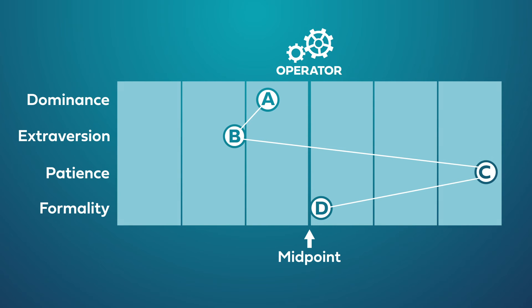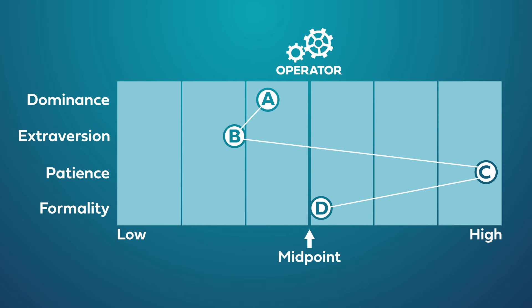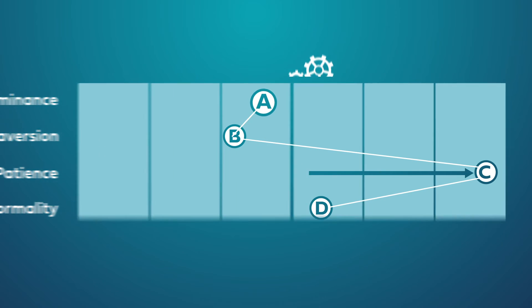If your results fall to the left of the midpoint, you'd have a low amount of that drive. If your results fall to the right of that midpoint, you'd have a high amount of that drive. The further you are from the midpoint, the stronger those behaviors will be present in the workplace. So, let's break these traits down a little further.